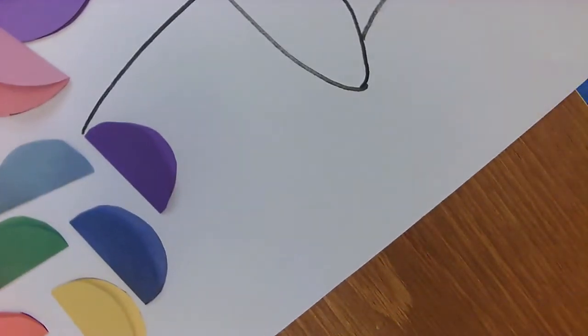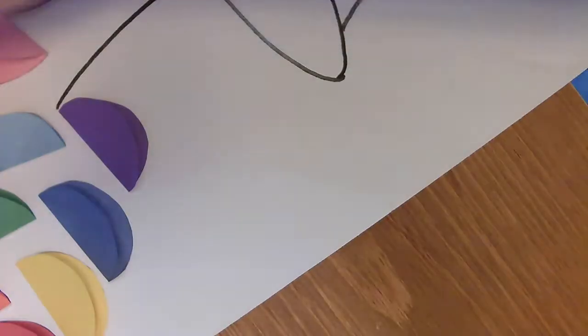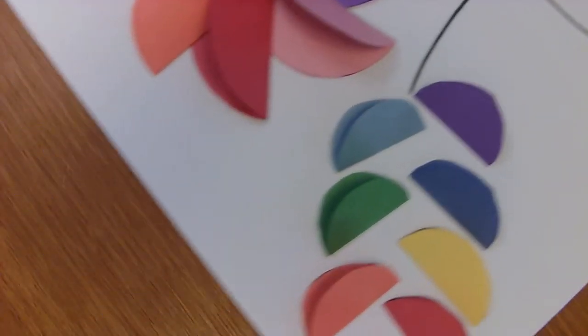So for our first step, you just have to decide what size circle you want. Remember, we're going to be putting all of our circles onto our piece of paper. So you don't want to make something that is too big of a circle, where you can't put more than one circle.